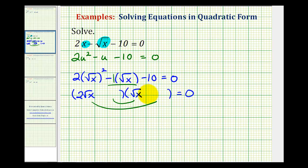Notice if we put +2 here and -5 here, we'd have -5√x + 4√x, which equals -1√x. So now this is factored correctly.